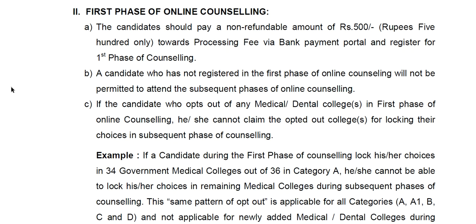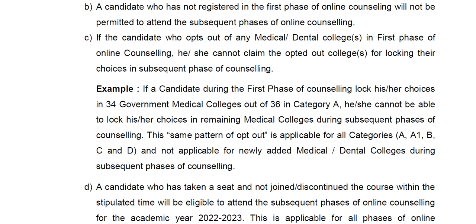This is the opt-out rule: the choice filling is clear, and the advisable condition is available. All colleges are available — all self-financing, and most government colleges are available. The conditions are available as mentioned in the prospectus, so the first phase of counseling proceeds.